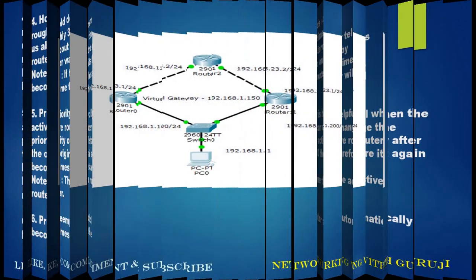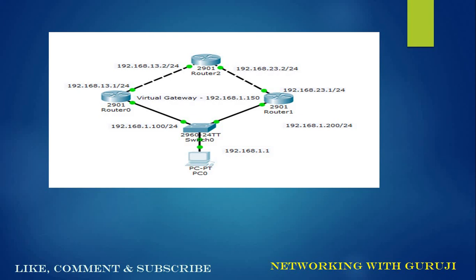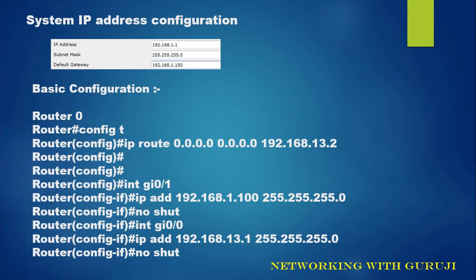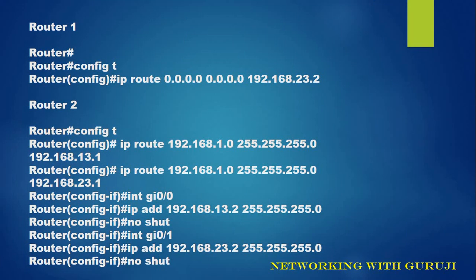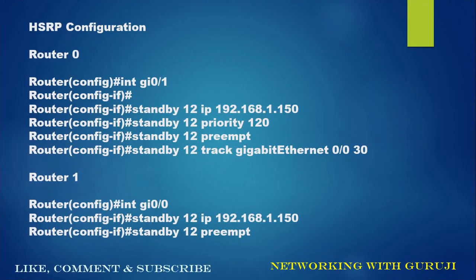Now let's see a scenario. Here we can see our PC is connected to a switch. The switch is connected to two routers, Router 0 and Router 1, and both routers are connected to Router 2. This is our system IP configuration. Here the default gateway is our HSRP IP. Before doing the HSRP configuration, we need to do some basic configuration: enabling IP routing and assigning IP addresses to the interfaces. This is the configuration of Router 1 and Router 2, and now this is the HSRP configuration for Router 0 on that particular interface.